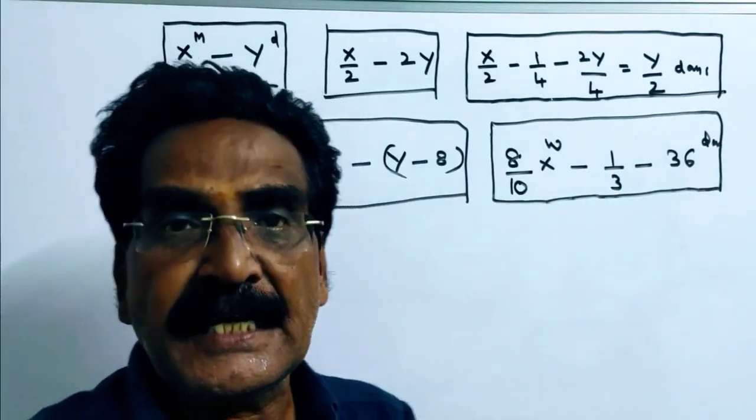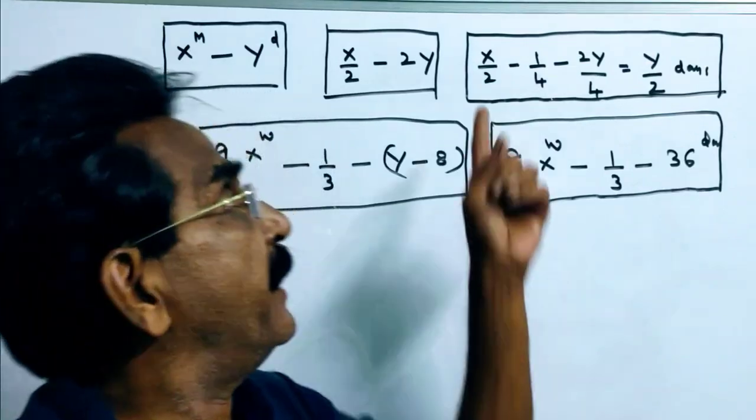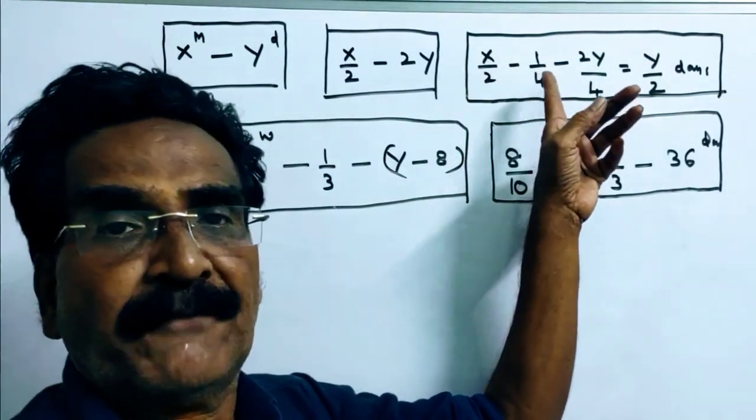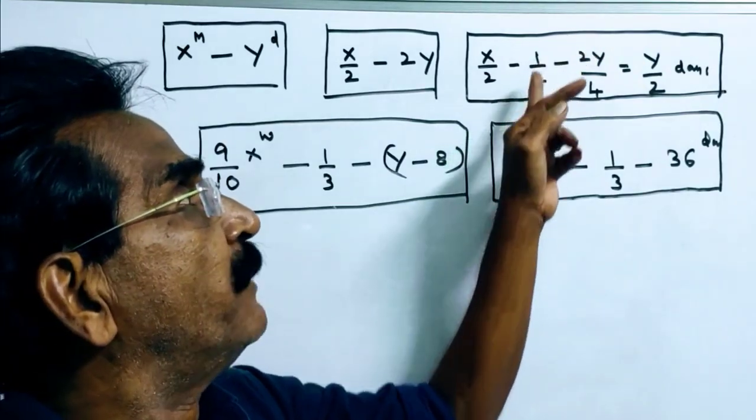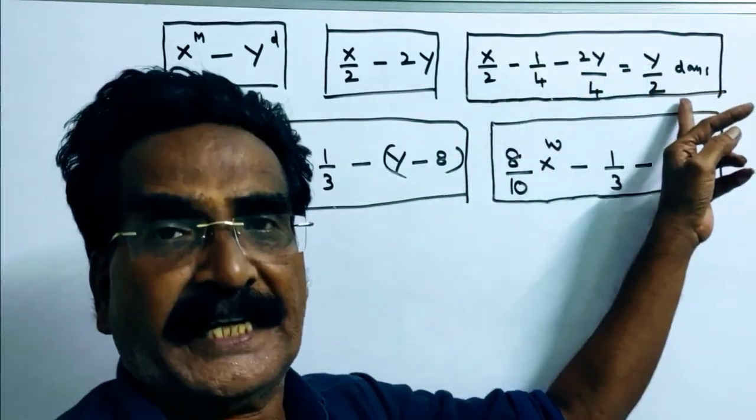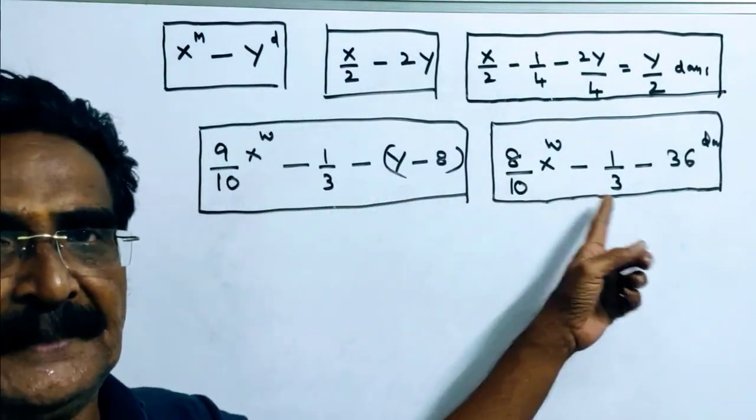This is our question: in how many days can 0.5 X men complete 1 by 4 work? Friends, 0.5 X men can complete 1 by 4 work in Y by 2 days. Now we have to find Y with the help of given two statements.